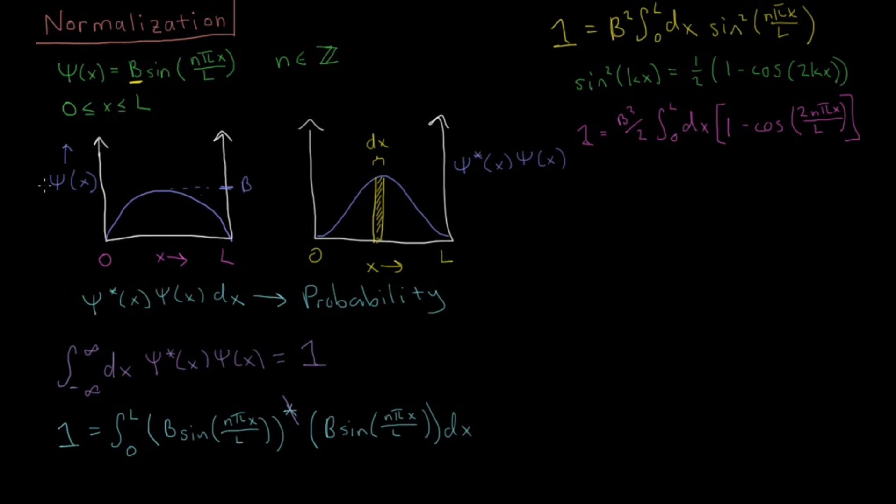So integrating both of these things, we're going to have one equals b squared over two. The integral of one with respect to x is going to be x. The integral of this cosine 2n pi x over L, if you do a quick substitution, you'll see that we'll get L over 2n pi sine 2n pi x over L. And this is going to be evaluated from zero to L.